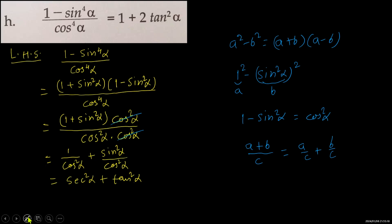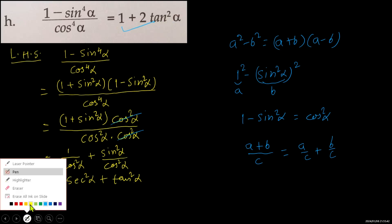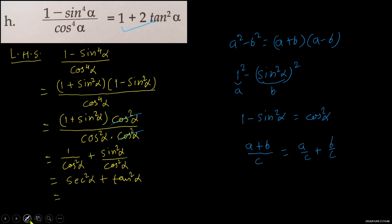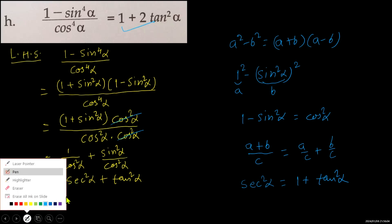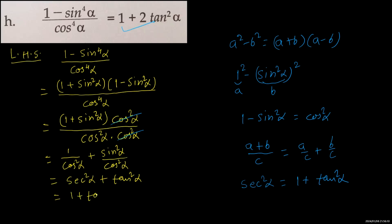But in the RHS, we have 1 plus 2 tan square alpha. There are 2 tan square alpha but no sec square alpha. It means we have to change this sec square alpha in terms of tan. We know sec square alpha is equal to 1 plus tan square alpha. So in place of sec square alpha, we can write 1 plus tan square alpha. And there is already one more tan square alpha, so we get 1 plus tan square alpha plus tan square alpha, which equals 1 plus 2 tan square alpha. And this is the RHS. Proved.